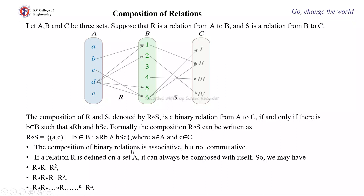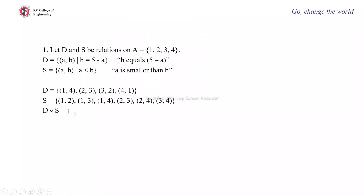The composition of binary relations is associative but not commutative. If a relation R on A is composed with itself, R∘R = R², and R∘R∘R = R³. This is called the power of a relation, represented as R to the power of N.